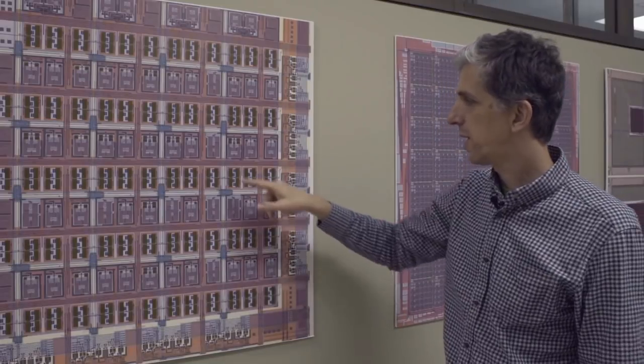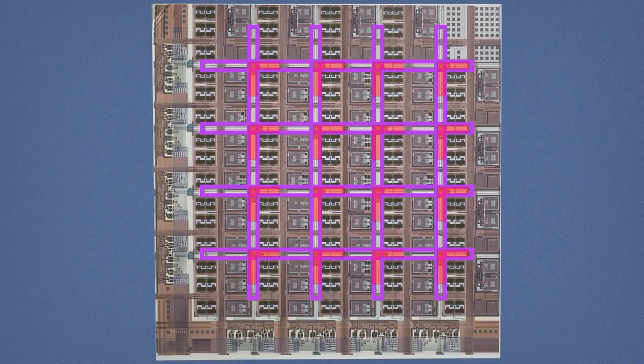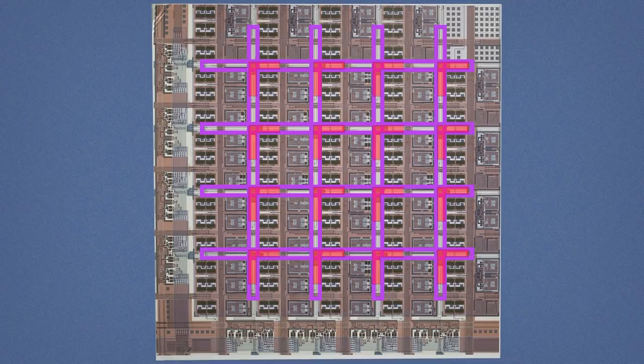Now wherever these qubits cross or intersect with each other, we put a tunable coupling element that can be used to allow the qubits to influence each other in a programmable way.